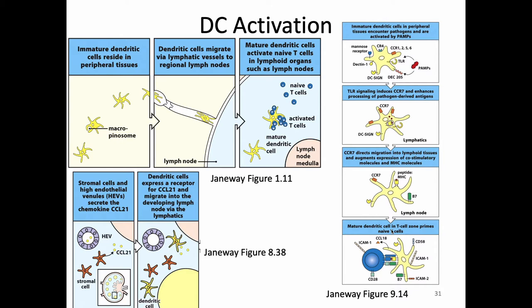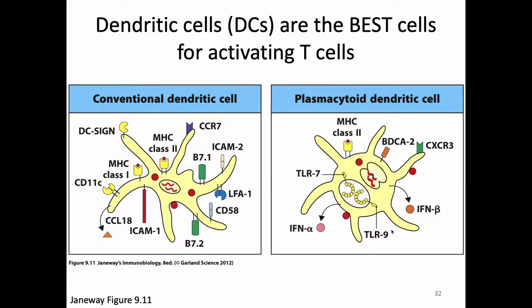That dendritic cell will migrate—specifically, it moves to the lymph node. So it's going to go to the right place to turn on T-cells. And it's also going to make a lot of cell surface proteins that are really useful for activating T-cells. We need to remember that, because dendritic cells are the best cells for activating T-cells.